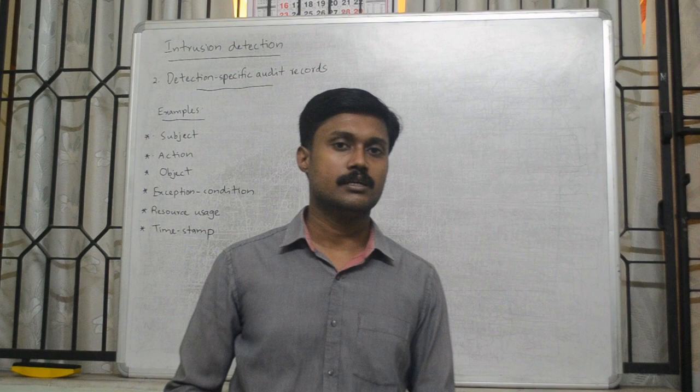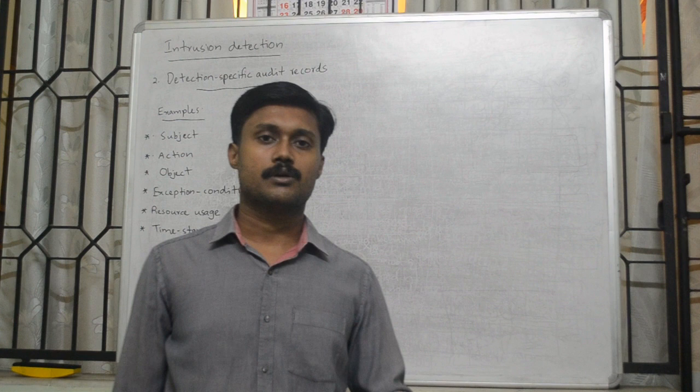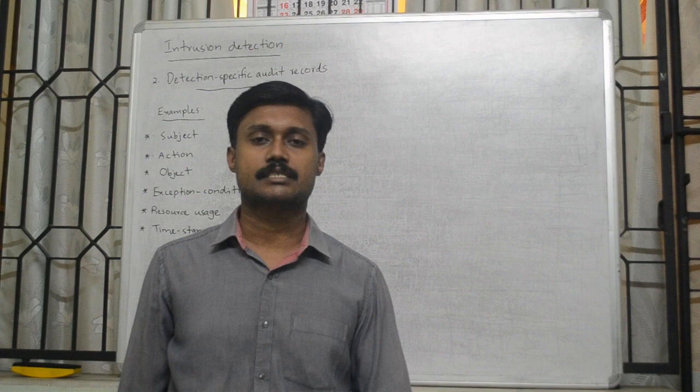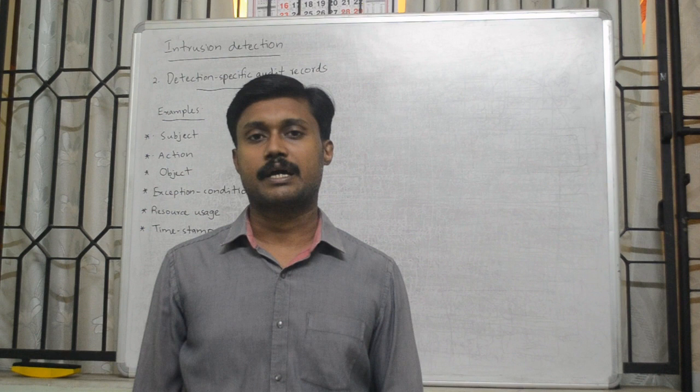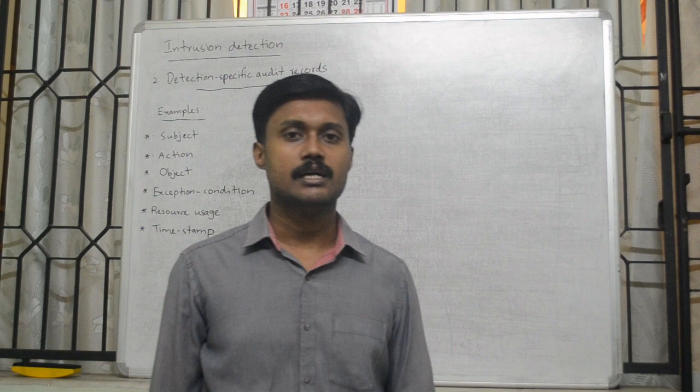If you want to make a detection-specific record, you can use a machine — you can use two accounting software packages, you can run built-in accounting software, or you can create an extra accounting package. If you want to make a record of a machine, you can use a machine to make a record. This is an advantage and an example of a detection-specific record.